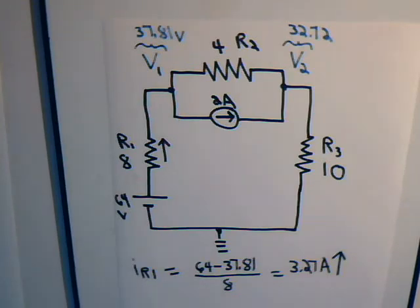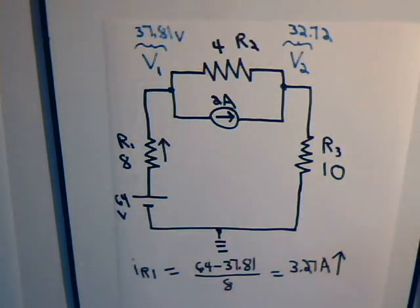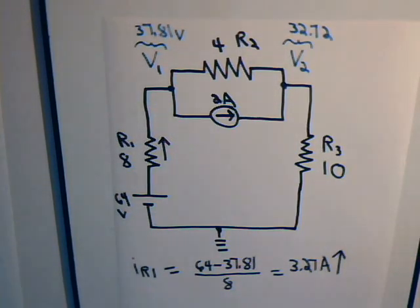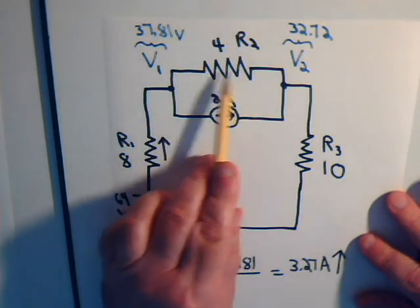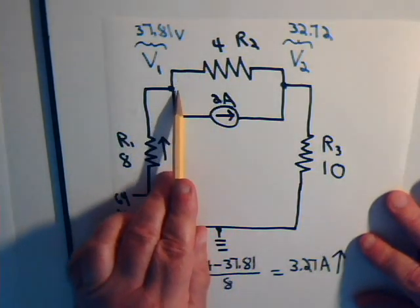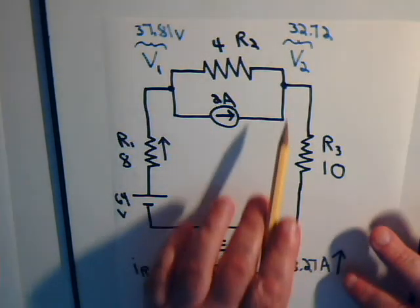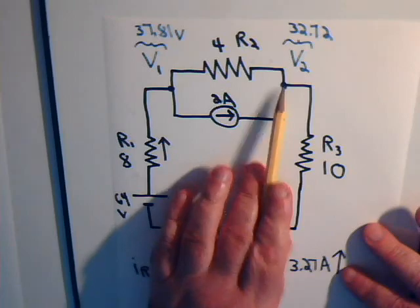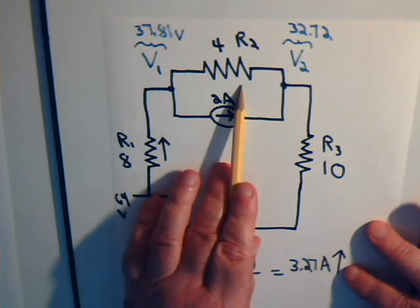Now, when we were setting the problem up and working with node 1 and node 2, considering the Kirchhoff current equations for each one, we assumed that the unknown currents were flowing away from each node. For this resistor, we assumed it was flowing away from node 1, but also away from node 2. Clearly it can't be both. But now we know which one,